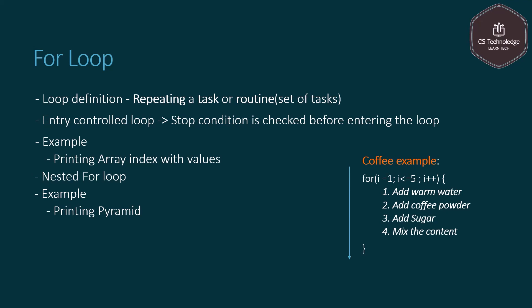Here we are using the for loop. The for loop is a type of loop. One feature of the for loop is that it is an entry control loop. An entry control loop means the stop condition or termination condition — for example, i less than 5 — will be checked before entering the loop. If the condition is satisfied, control enters the loop; if the condition fails, the loop will not execute.